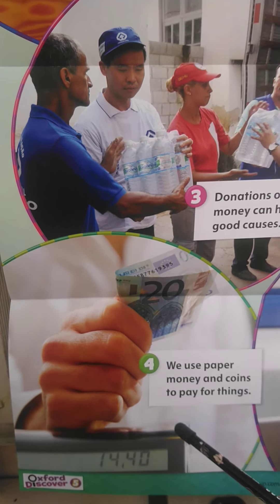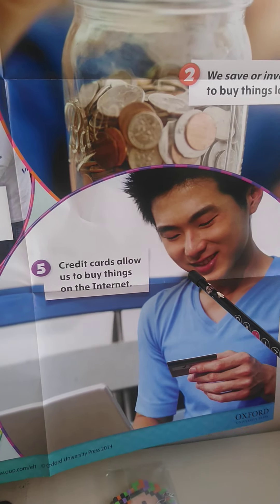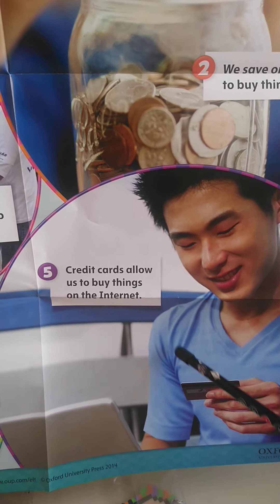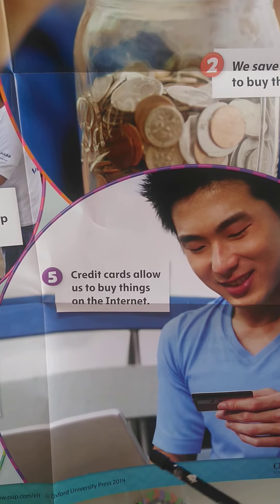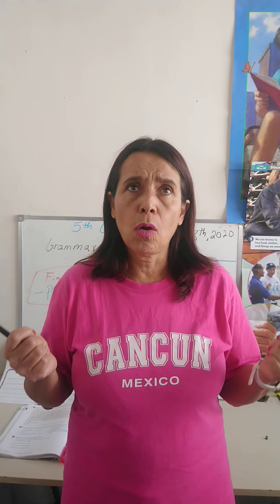Remember that we donate some of our money for the boys that have cancer. In point four, we use paper money and coins to pay for things. And the other one is the invisible money. Credit cards allow us to buy things on the internet, or even if you want to go to a special store and your mother or father has a credit card, they can use it.